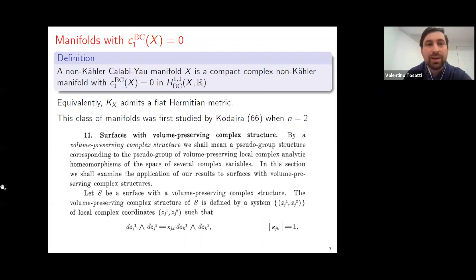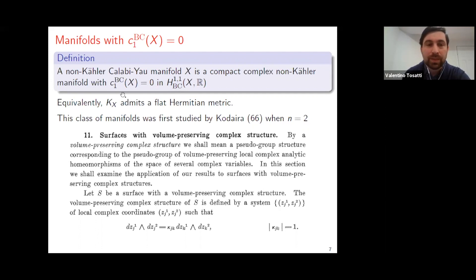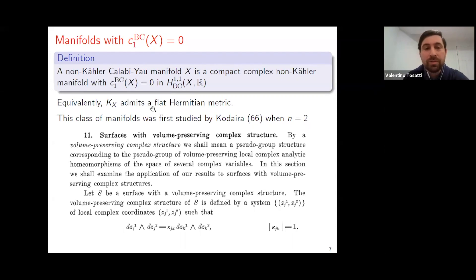Now comes my main definition. A non-Kähler Calabi-Yau manifold in this talk will be a compact complex non-Kähler manifold with first Chern class vanishing in Bott-Chern cohomology. Most of the time I won't assume non-Kähler, so I'll just call them manifolds with vanishing first Chern class — the Kähler ones are also interesting but are the same as usual Calabi-Yaus. One can think of this condition equivalently as saying that the canonical bundle of X admits a flat Hermitian metric, i.e., a Hermitian metric whose curvature R_h is zero.